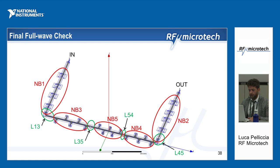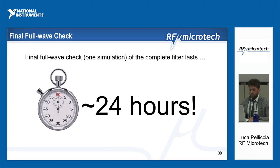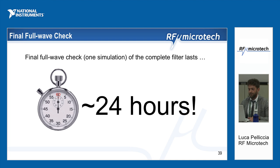After the optimization, we implemented the full wave design using the lengths optimized in AWR. This structure — comprising the five notch band filters and interconnections — was simulated in full wave, and the simulation lasted 24 hours. This means that if we had tried to optimize directly in the full wave simulator, we would have needed approximately 100 days, which was not acceptable. This is why AWR was so helpful.